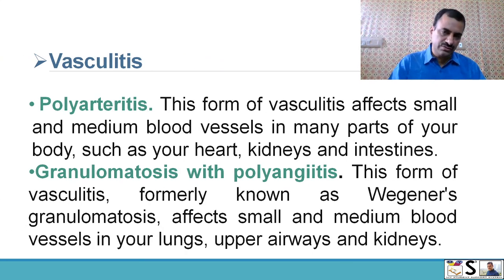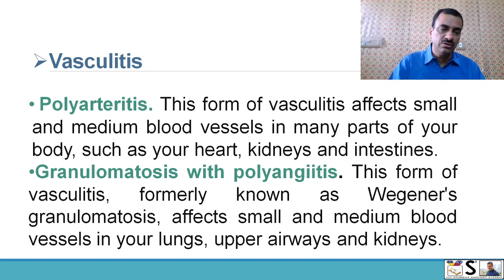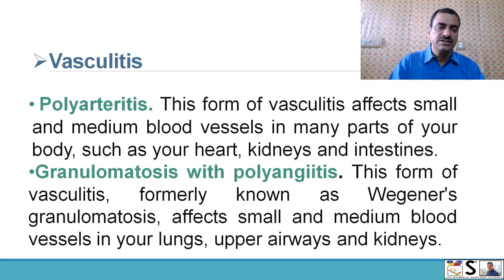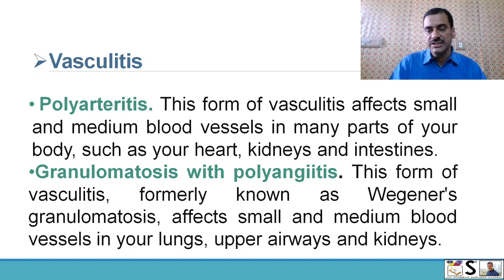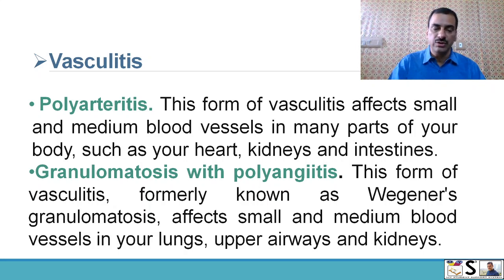Another set of causes for acute glomerulonephritis is vasculitis. One form is polyarteritis, which affects small and medium blood vessels in many parts of the body such as the heart, kidney, and intestine. Another form is granulomatosis, which affects small and medium blood vessels in the lungs, upper airways, and kidneys.